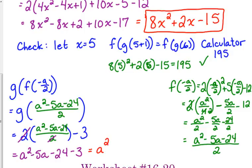And so that's a squared minus 5a minus 24 minus 3. So final answer, a squared minus 5a minus 27.